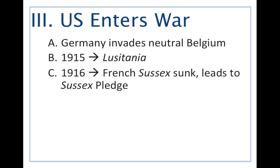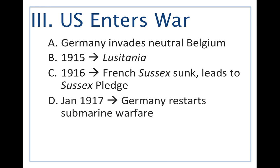One year later, Germany again under unrestricted submarine warfare sinks the French ship the Sussex. Upon the United States' deep disapproval, Germany signs the Sussex Pledge, agreeing not to do this anymore. But within a year, Germany restarts the submarine warfare, sending a message to the United States that trade with the Allied powers will not be accepted. Wilson has a big problem with that — he should not be told who he can trade with when it comes to foreign conflicts.